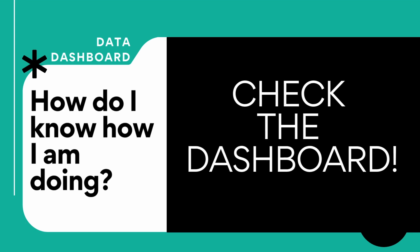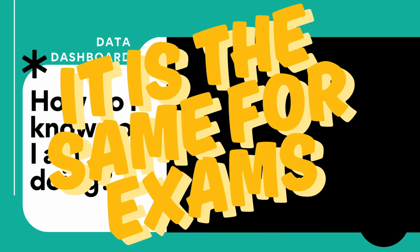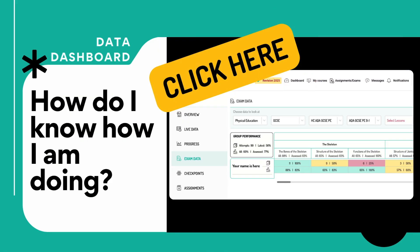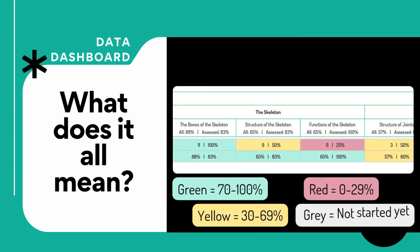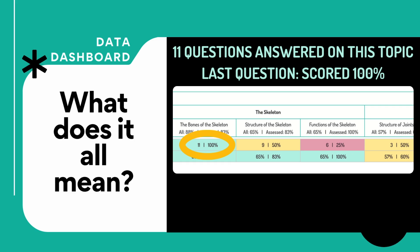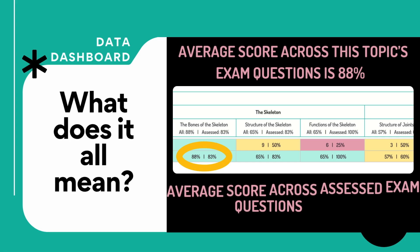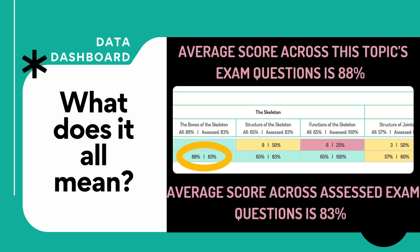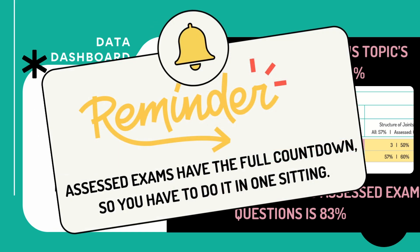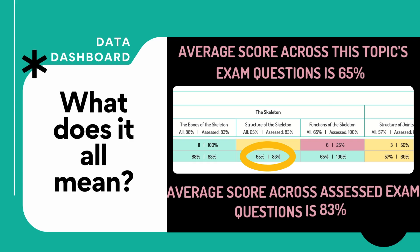Data dashboard: how do you know how you're doing on exams? Check the dashboard — it's exactly the same for exams. Click dashboard, then click to the exam data, go through your class and you will see: green is good, yellow is concerning, red is not so great, gray means you've not started. For example, 11 questions answered in one topic with the last score at 100%, nine questions on the structure of the skeleton with a last score of 50%, and six questions on the function of the skeleton with 25% last score. Average exam score is 88% on exam questions and 83% on assessed exams.